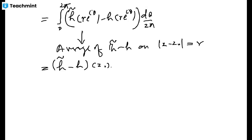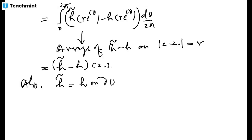If two functions each satisfy the mean value property, their difference also satisfies the mean value property. We also note that H̃ and H are the same on the boundary of U, so their difference is zero on the boundary of U.